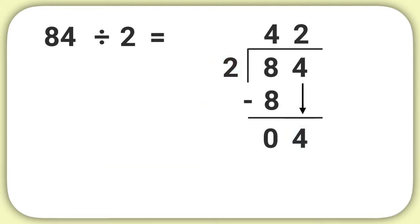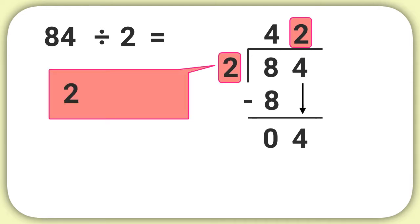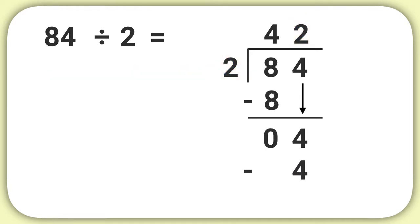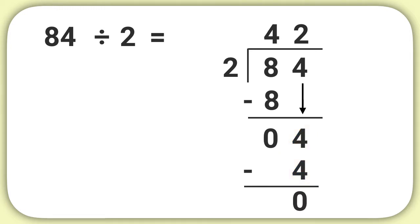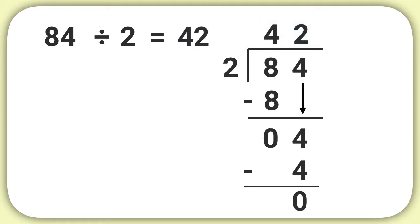From there, we multiply 2 times 2. Think in your head: 2 times 2 equals 4. And write minus 4 into your problem. Now we subtract, and when we solve 4 minus 4, we get an answer of 0. We'll write that into our problem. Now because there are no digits left to bring down, we're done. We can see the answer above the line: 84 divided by 2 equals 42.